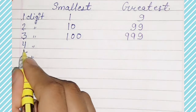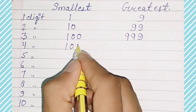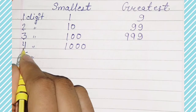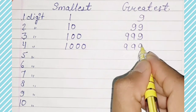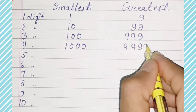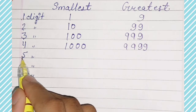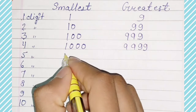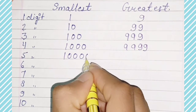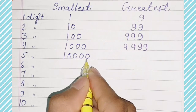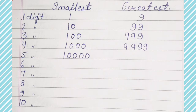4-digit smallest number is 1000 and 4-digit greatest number is 9999. 5-digit smallest number is 10000 and 5-digit greatest number is 99999.